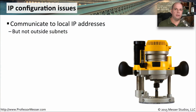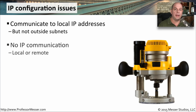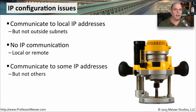If there is a local IP address configuration problem, you'll often see a number of different symptoms. You might be able to communicate to local IP addresses but not to anything outside of your subnet, or perhaps you can't communicate to anything at all. You may be able to communicate to some IP addresses and not others. If you run into any of these problems, you may have an IP configuration issue.